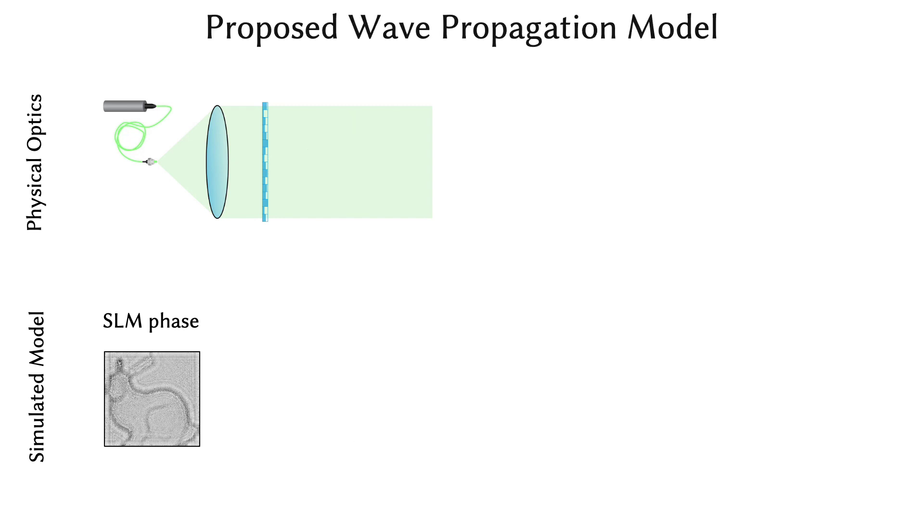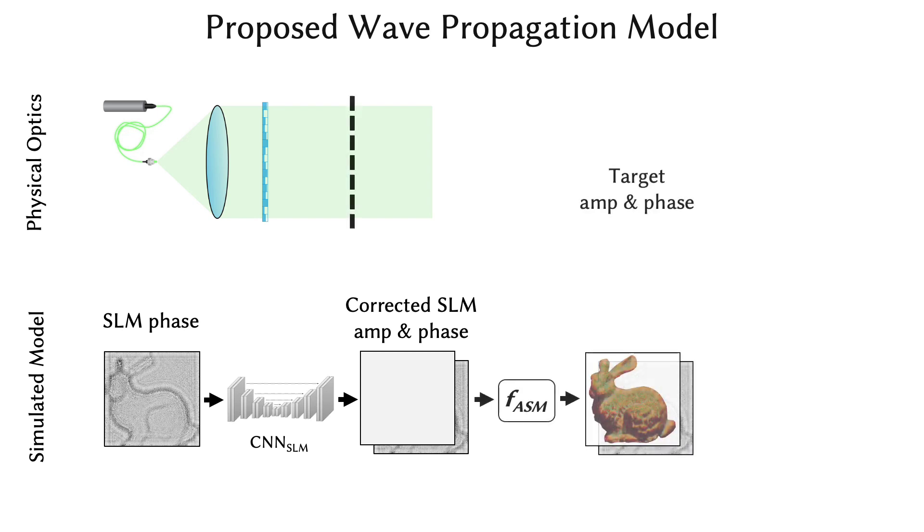We introduce a neural network parameterized model that can be automatically learned. Our model simulates the forward image formation by applying a convolutional neural network on the SLM phase to compute a corrected complex-valued field on the SLM plane. This is propagated to the target plane using a conventional ASM model.